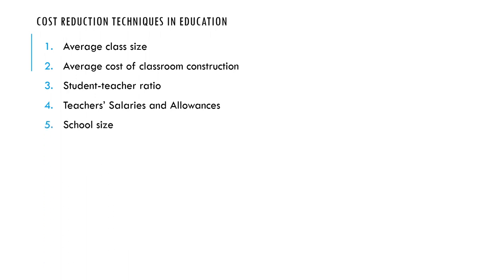Regarding school size: if you have a very large school size, it may be difficult to manage. But let's assume we have a state where at the primary level, all children of school age should go to school. If you reduce school size, it means some children will be cut off from schooling. So you need to work on school size while also ensuring you provide access. In trying to reduce costs, do not over-reduce and create another problem.